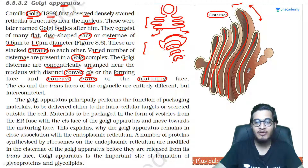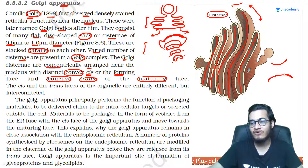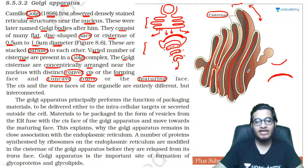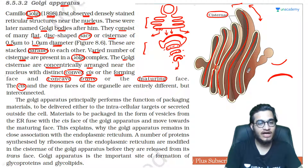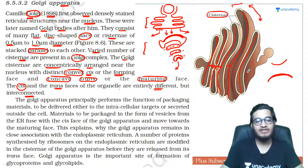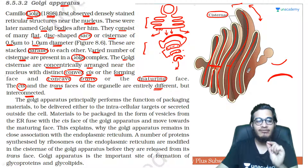Yani yeh jo pehla part hai, it is convex with respect to the nucleus — toh iske respect mein bilkul convex ho gaya hai pehla part, toh yeh aapka forming face hai jo ki ER se connected hai. Aur yeh aapka maturation face hai jo ki ER se pare hai, jise aap concave bhi bolte hain kyunki iska jo free end hai woh concave jaisa hai. So, cis aur trans jo faces hain, yeh bahut different hote hain lekin ek doosre se interconnected hote hain, kyunki in saari cisternae ke beech mein connection provide kiya rahta hai so that they can interact with each other. Aur cis aur trans ke beech mein jo Golgi ke components hote hain — cisternae hote hain — unhe aap bolte hain median Golgi.